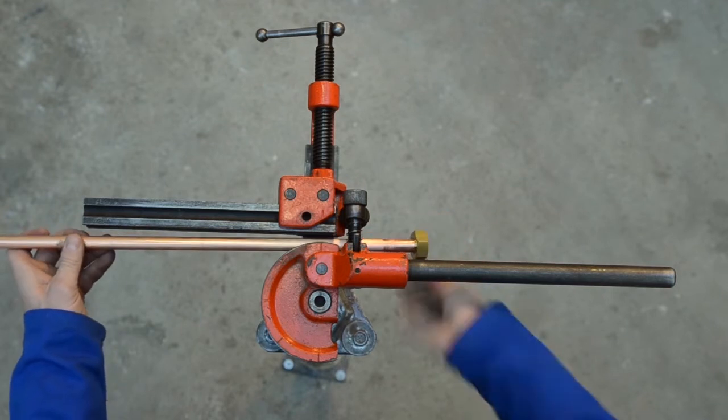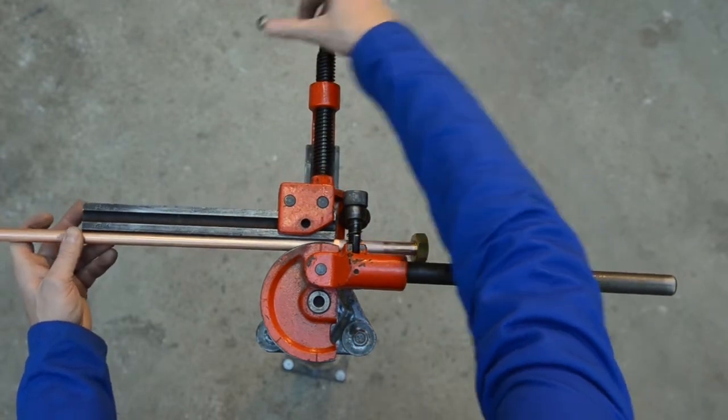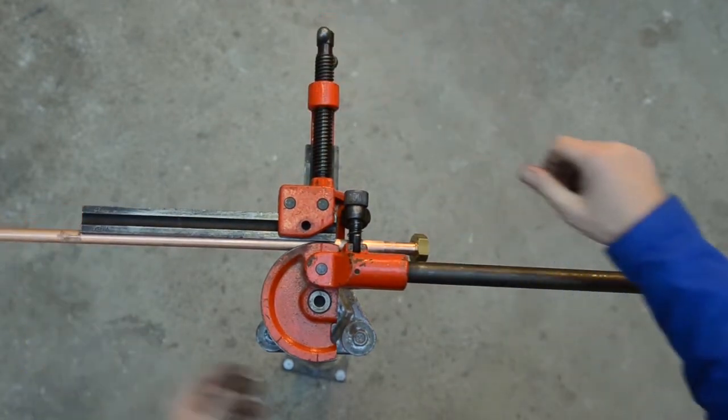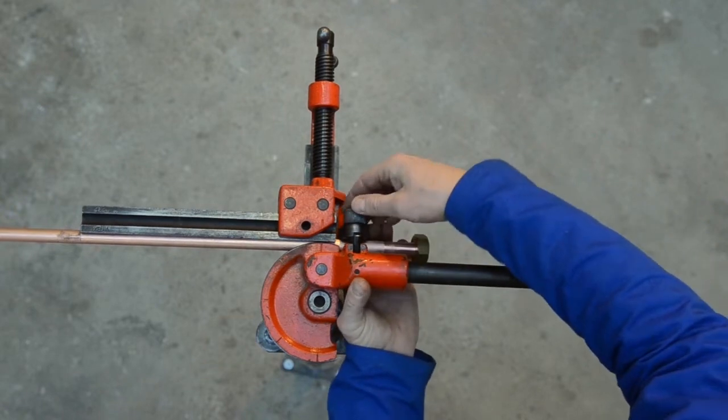Les façonnages déjà effectués se trouvent toujours du côté du manche de la cintreuse d'établi. Dans cet exemple, c'est un collet battu.